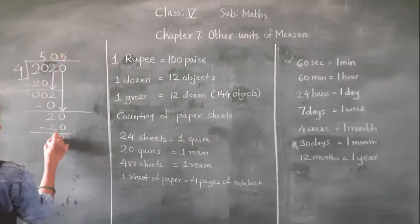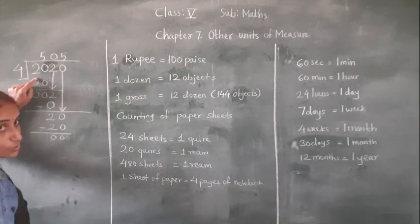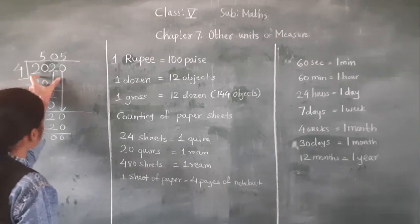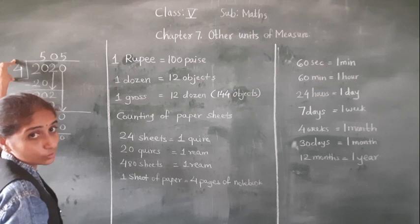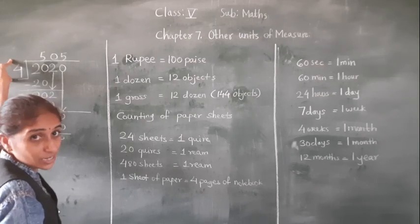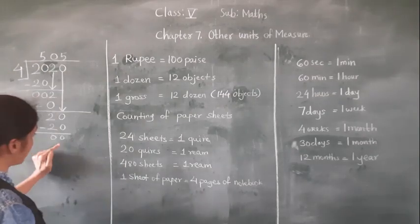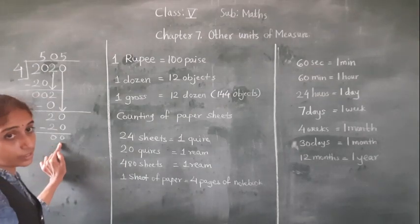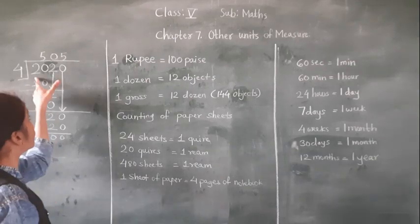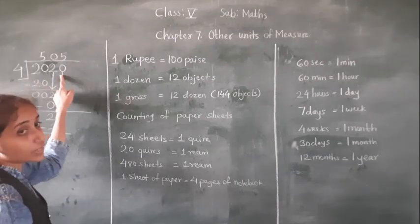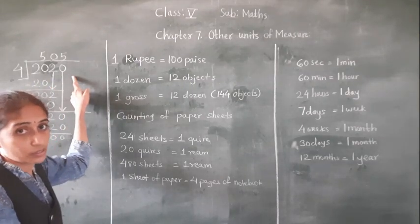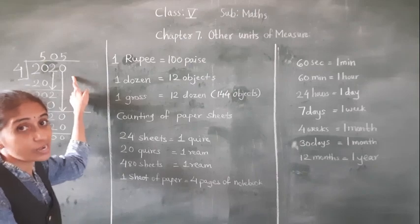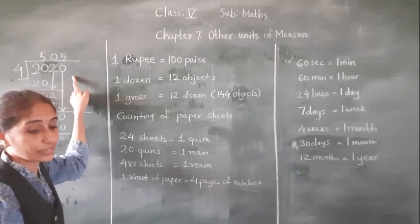Which year is going on? 2020. For this year, is it divisible by 4? Yes, because it is divided by 4 completely — here we get remainder 0. So 2020 — this year is called a leap year.